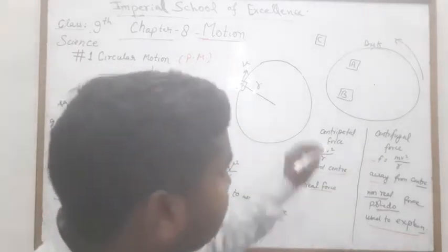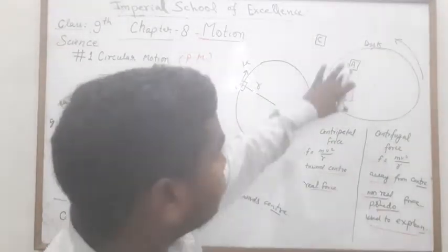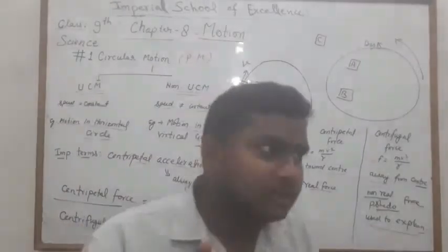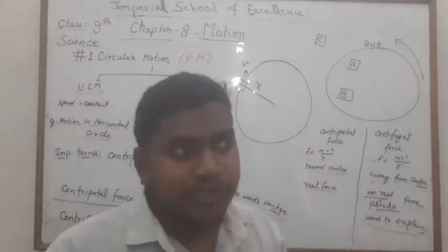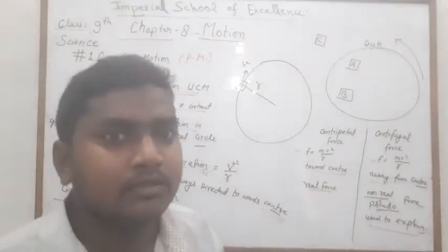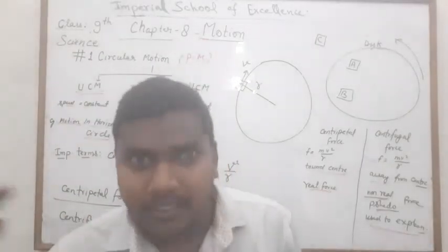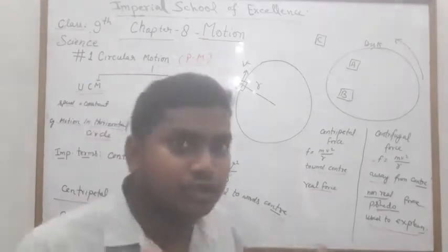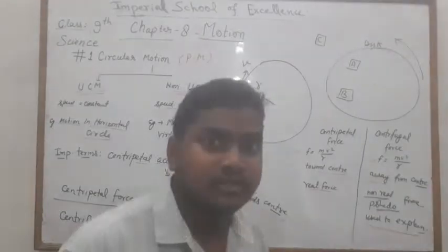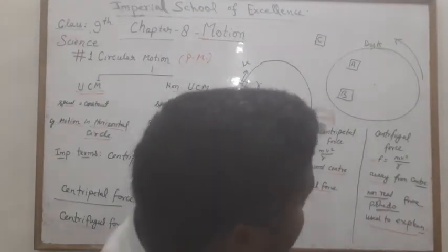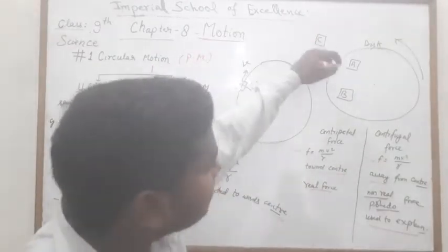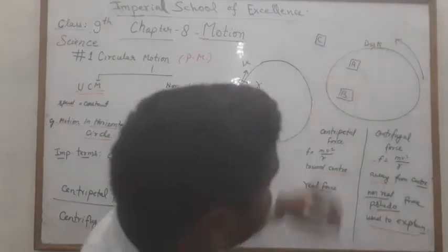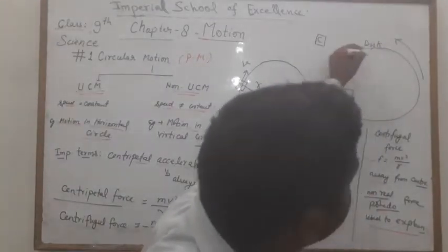अब B की बारी: B जब A को देखता है तो कहता है 'A is at rest' - क्योंकि दोनों same disc पर हैं और दोनों rotate कर रहे हैं। बिल्कुल वैसे ही जैसे हम Earth पर हैं - Earth rotate कर रही है लेकिन हमें motion feel नहीं होता। लेकिन B के पास C की observation भी है कि A पर center की तरफ force लग रहा है।